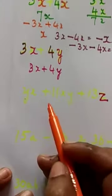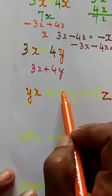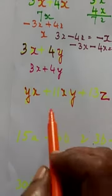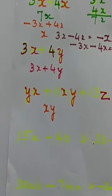So write yx and xy are like terms, xy. Here xy are like terms, so you can write xy. Here is 11.